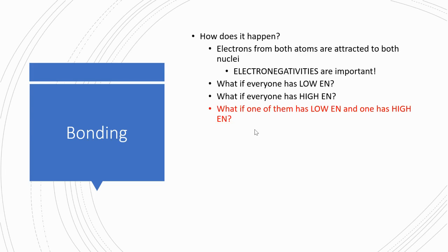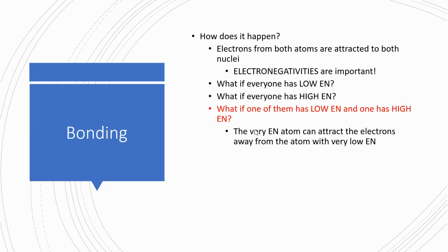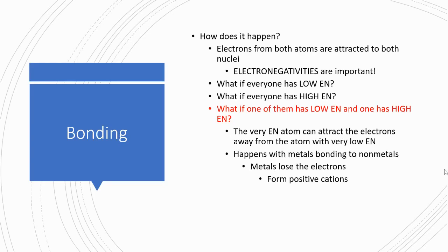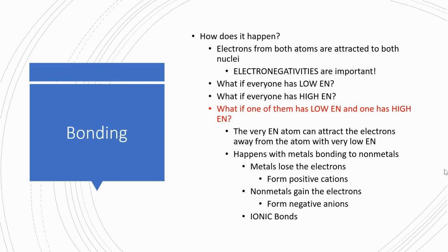What if there's a big difference — one atom has low electronegativity and one has very high electronegativity? In that case, the atom that is very electronegative can attract the electrons away from the atom with very low electronegativity, totally stealing the electrons. This happens when metals bond to non-metals. The metals will lose their electrons and form positive cations, while the non-metals gain those electrons, forming negative anions. Now they are held together because you've created positive and negative ions that are attracted to each other. This is called an ionic bond.